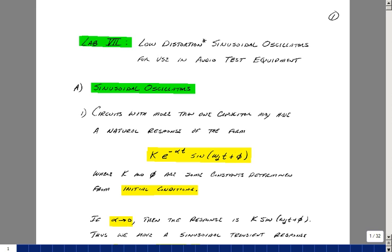Lab number seven is entitled Low Distortion Sinusoidal Oscillators for use in audio test equipment. What we're going to do in this lab is take a DC source and turn it into a sine wave generator.